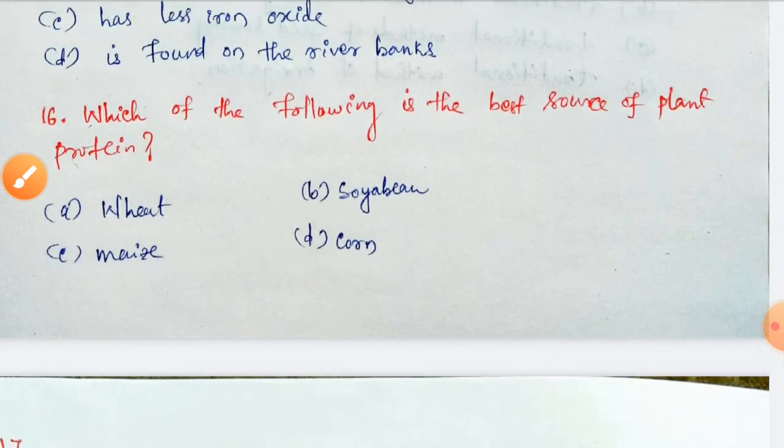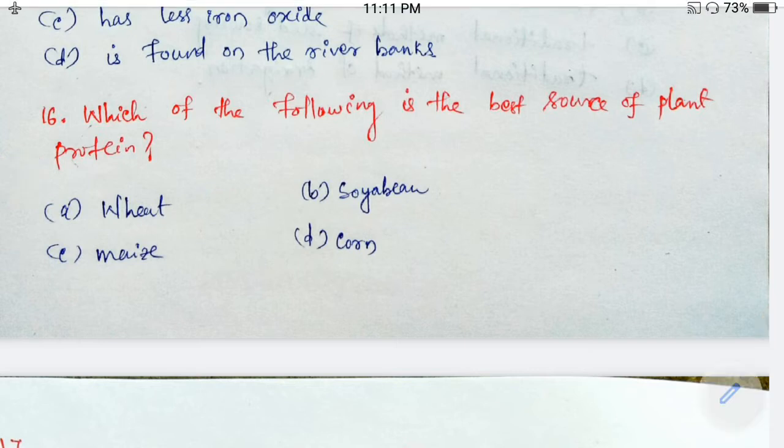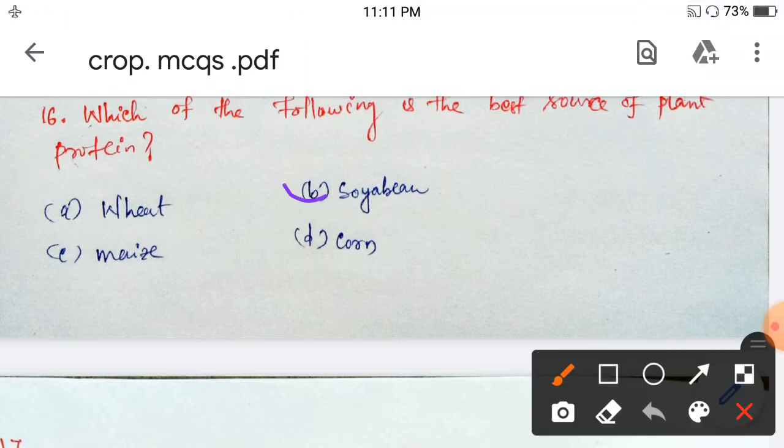Next question: which of the following is the best source of plant protein — wheat, soybean, maize, or corn? It is soybean. That is why it is also popularly known as vegetarian meat. So option B.